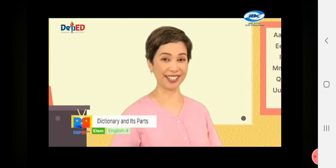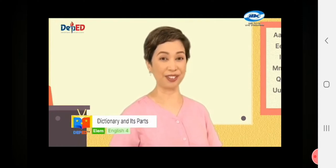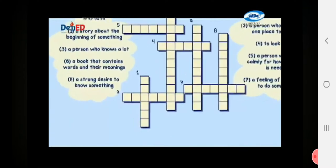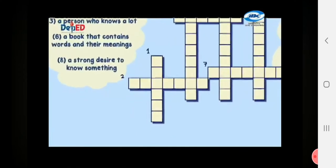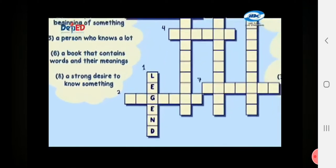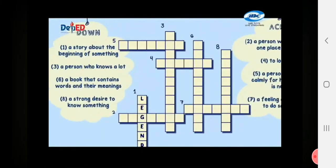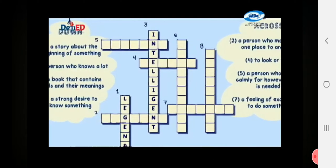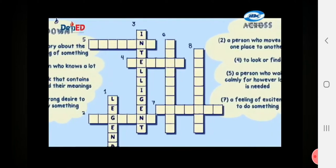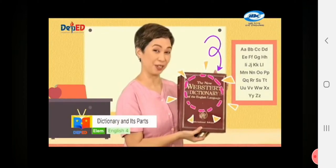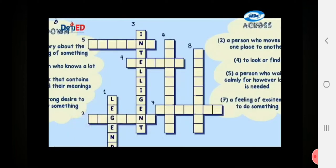Do you think you got the right answers? Let's check and put the correct words inside the boxes. Number one, it is a story about the beginning of something. The word we're looking for is legend. Number three, this word means a person who knows a lot. The answer is intelligent. Number six, it is a book that contains words and their meanings. Remember this book I showed you? It's dictionary.